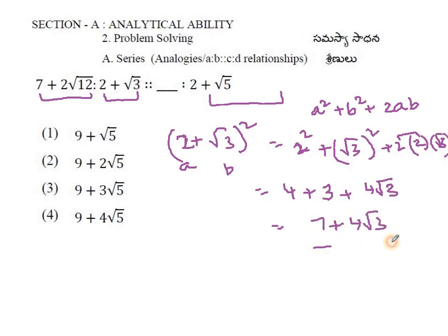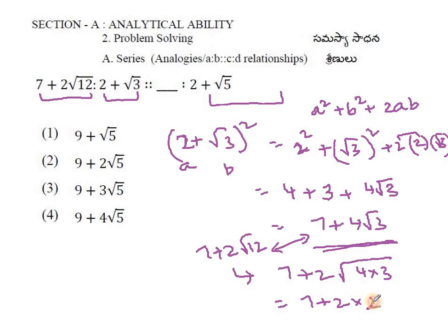This gives 7 plus 4 root 3. But what about 7 plus 2 root 12? Are these the same? Yes, they're the same. 7 plus 2 root 12 can be written as 7 plus 2 times root of 4 times 3. Square root of 4 is 2, which comes outside, leaving root 3. So 2 times 2 root 3 equals 7 plus 4 root 3.